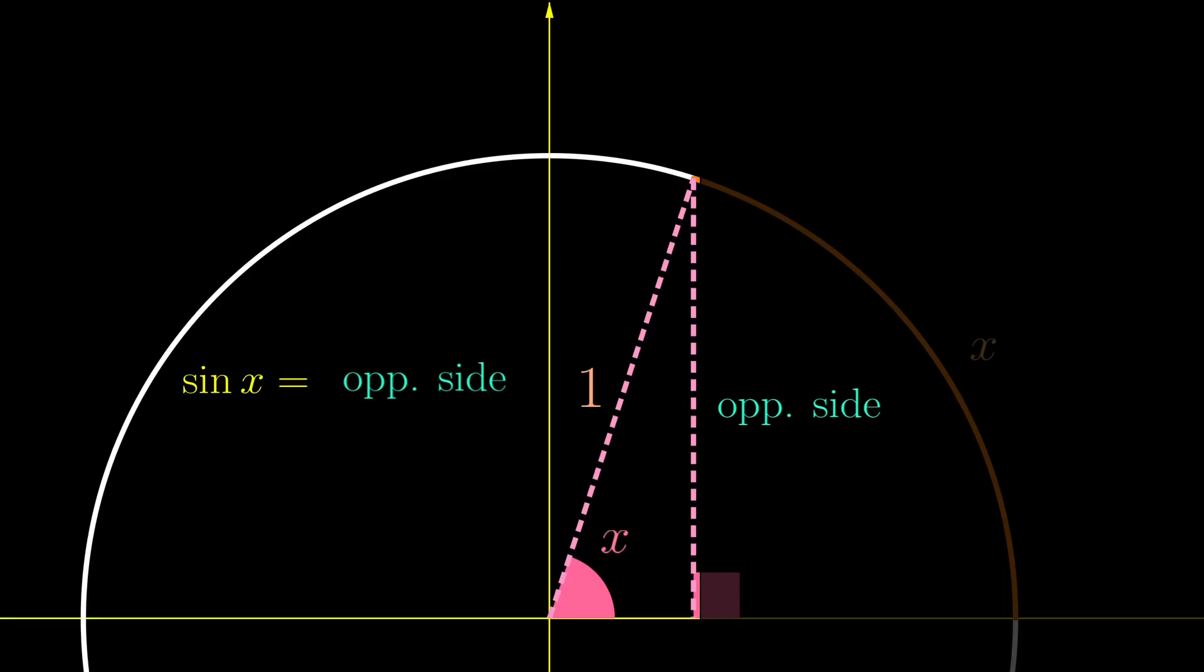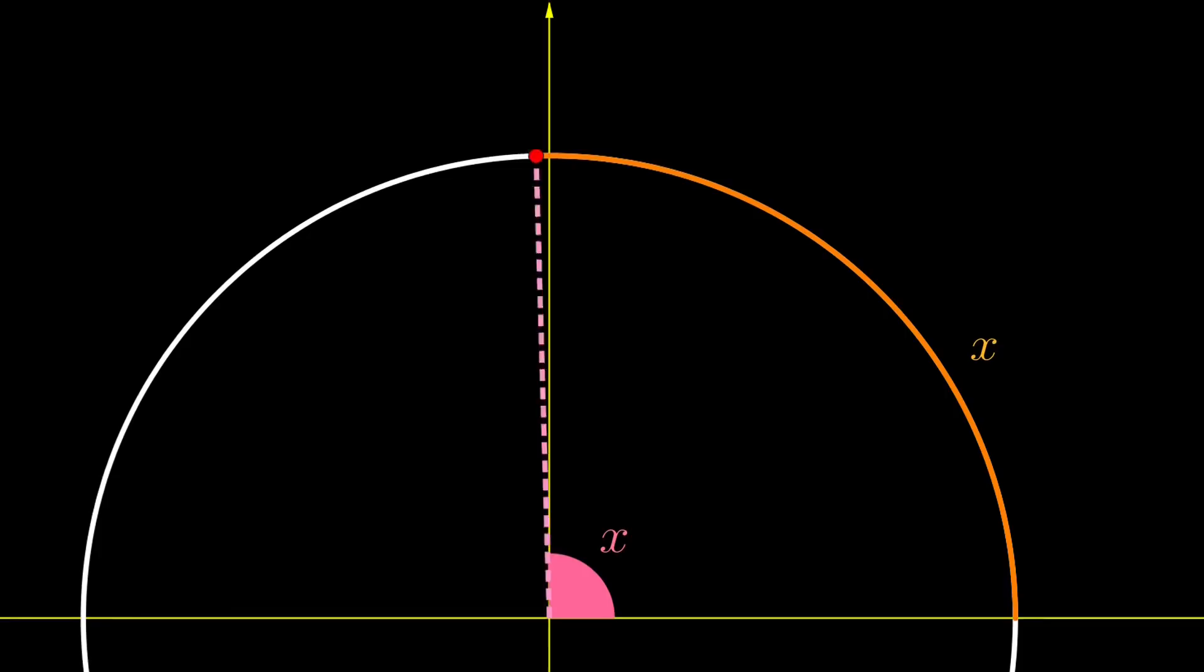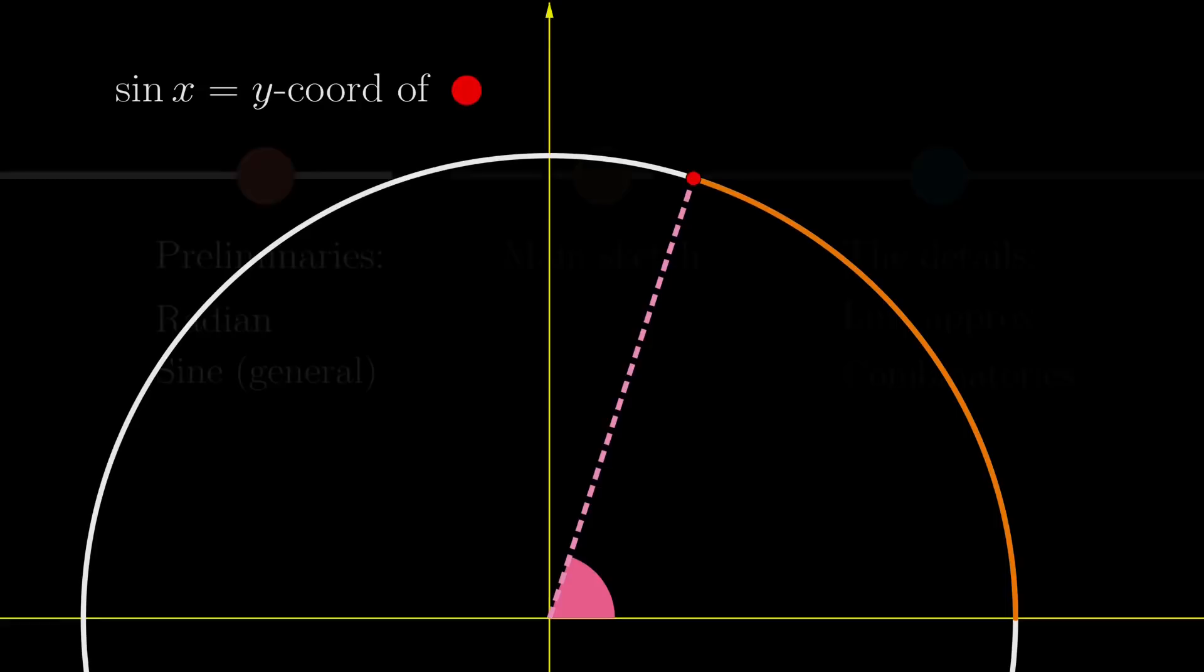This means that sine x is just the opposite side. But it might be better to think of this as the y-coordinate of this point at the top, because now we only need to rely on this point, making the diagram cleaner. And even if x is not acute, we can still define what sine x is, but for this video, we are focusing on acute angles only because the diagram will be much less messy.